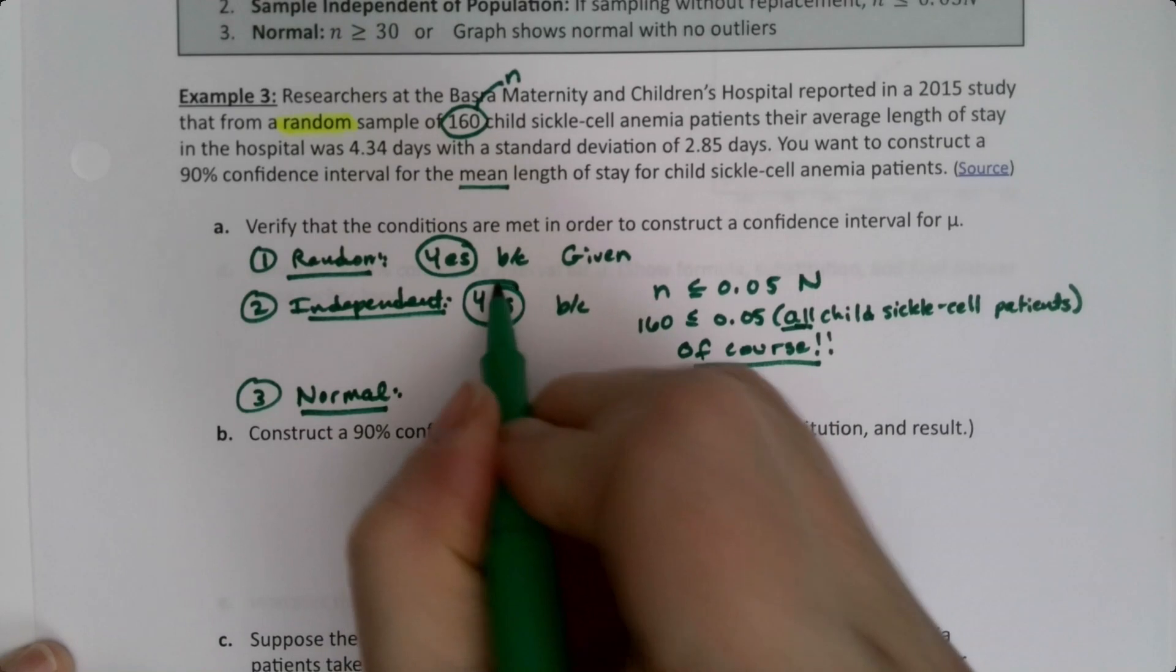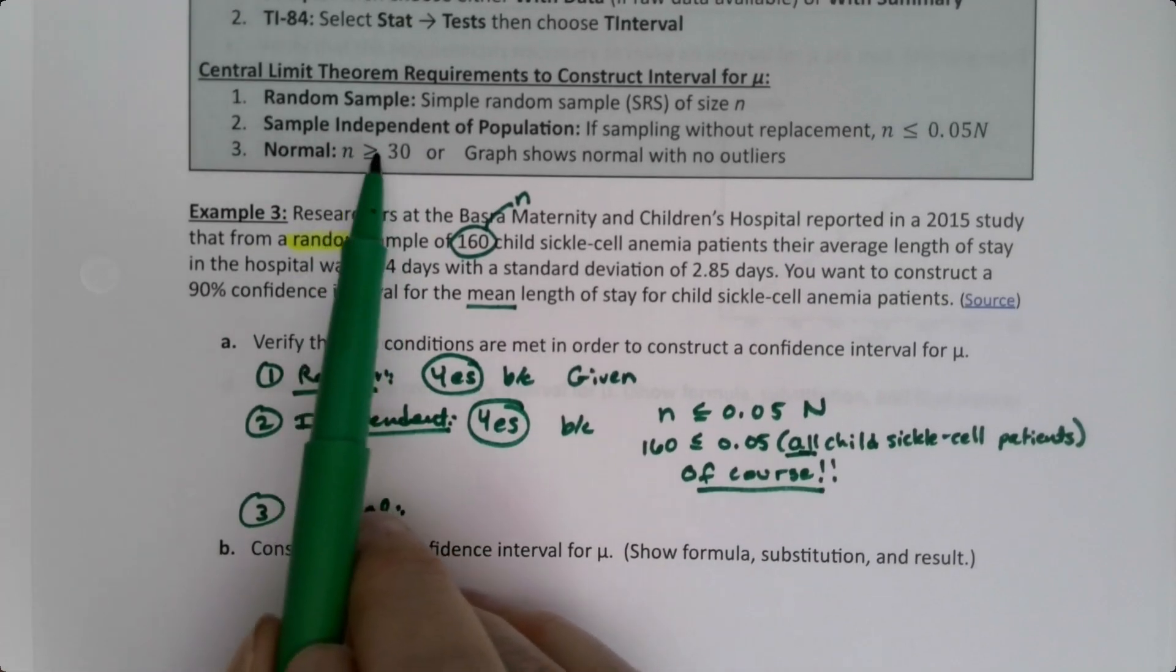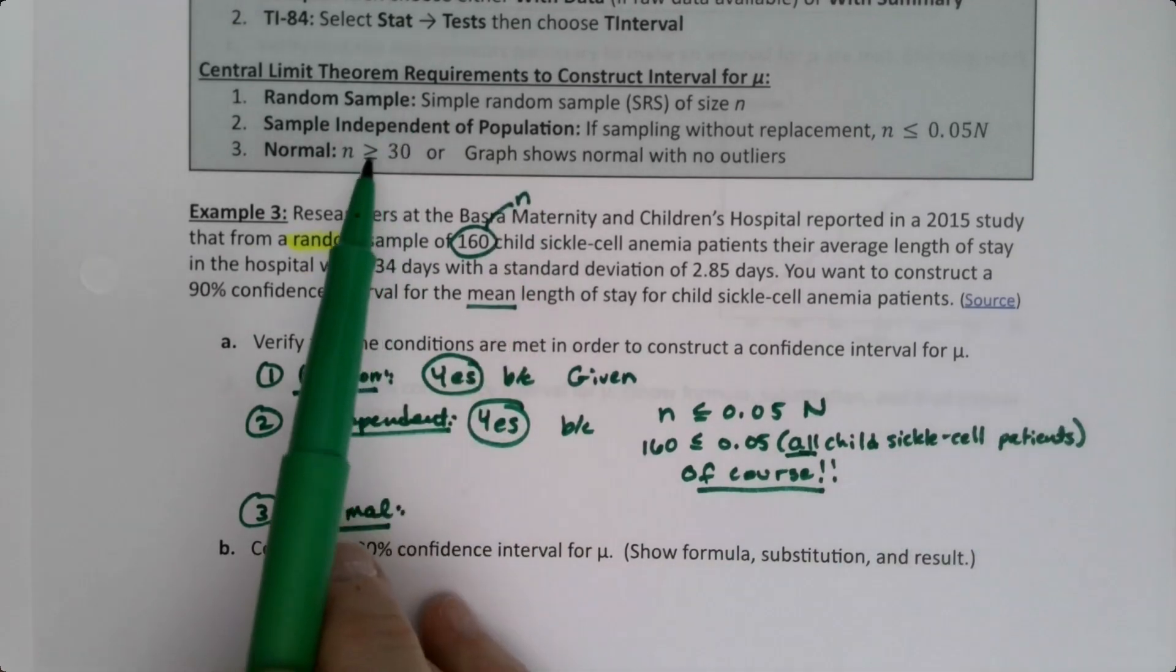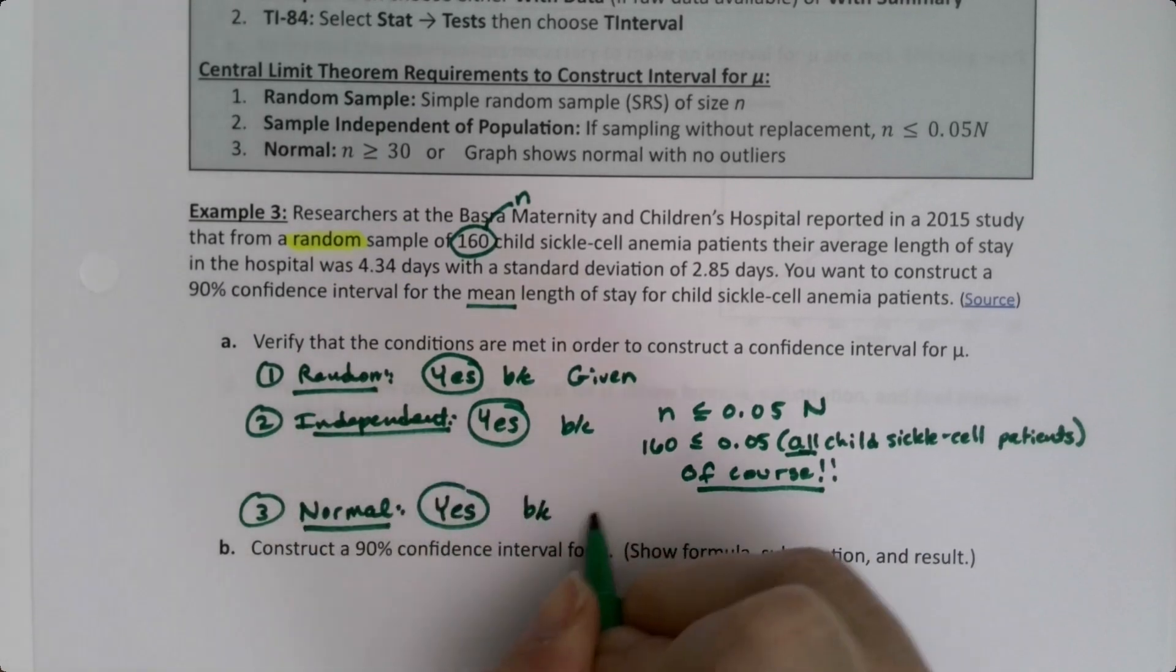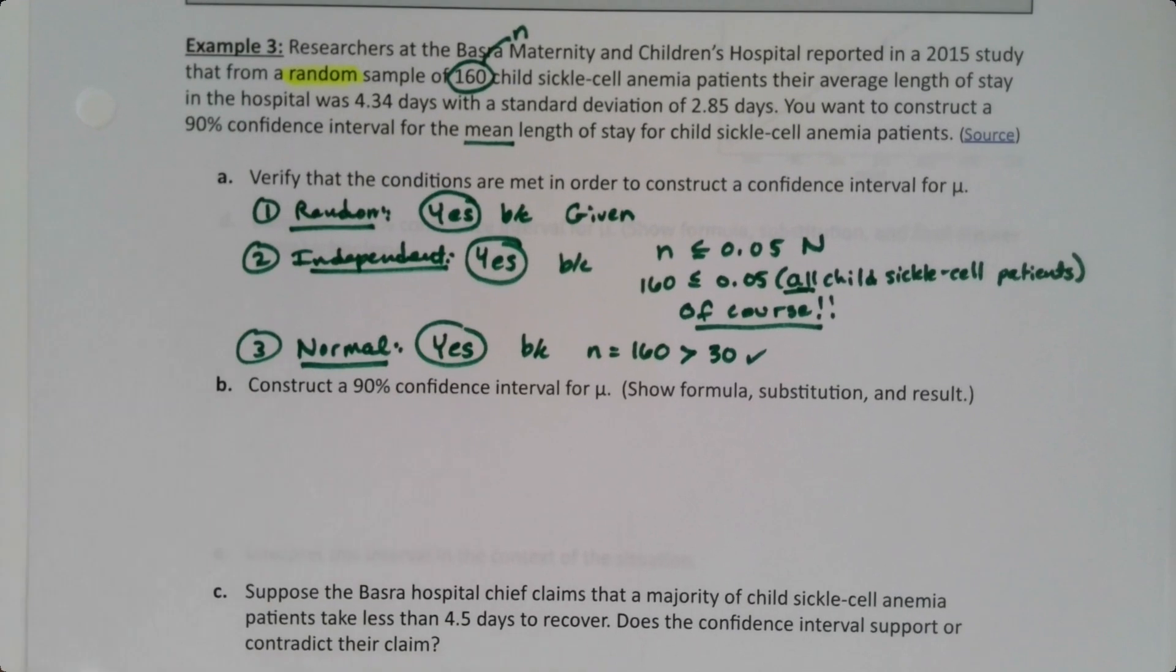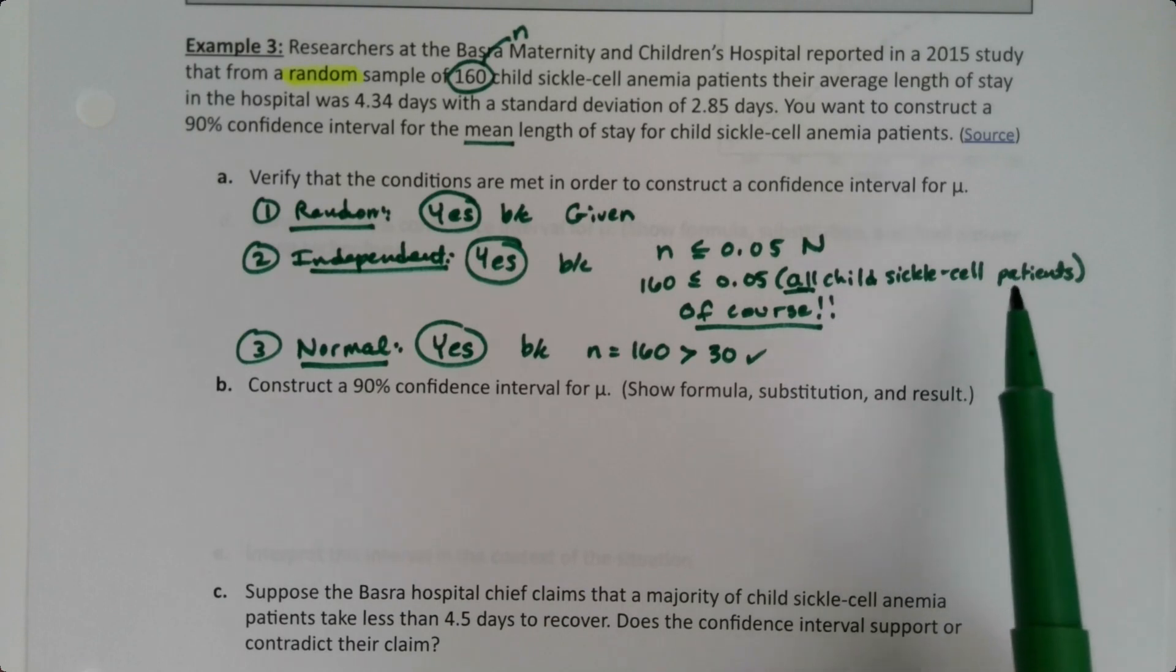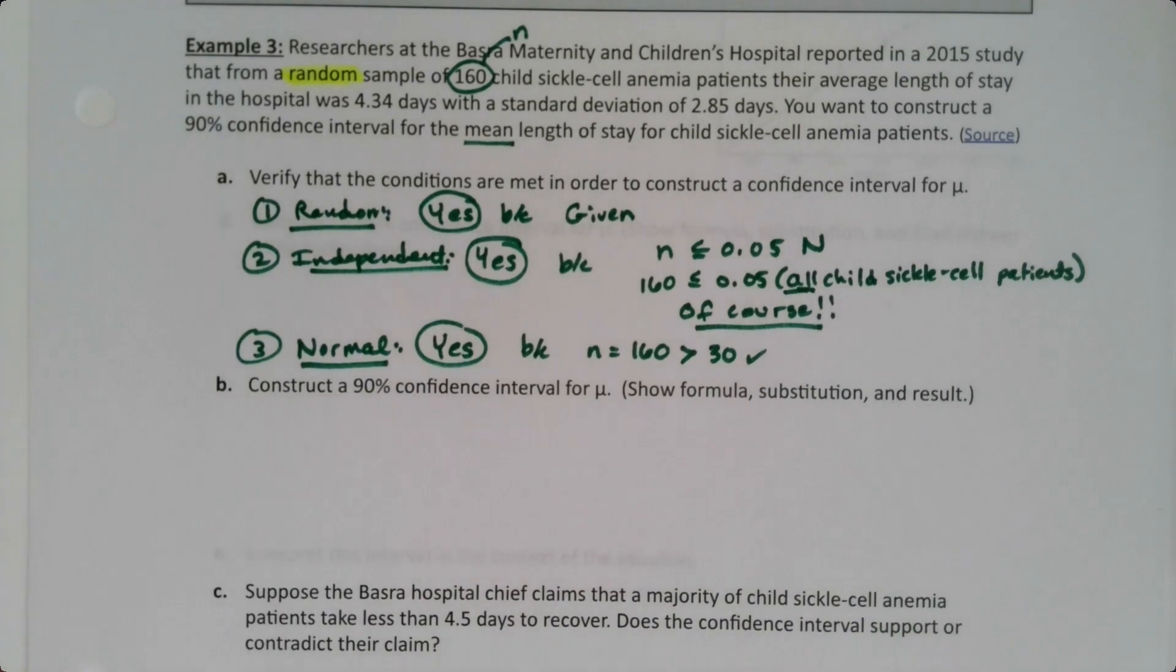Normal. Well, normal is easier in this section than it is in 9.1 because we just need n to be bigger than 30 or a graph given. Well, there's no graph given, but I do have n, which is 160, is bigger than 30. So we're good. The weirdest one, of course, is that independent piece. If we're given the number, we put it in, right? If we know what capital N is, the population size, we can put it in. If we don't know the population size, we can kind of talk about what it would be and say, well of course that's going to be really big, so we're okay.